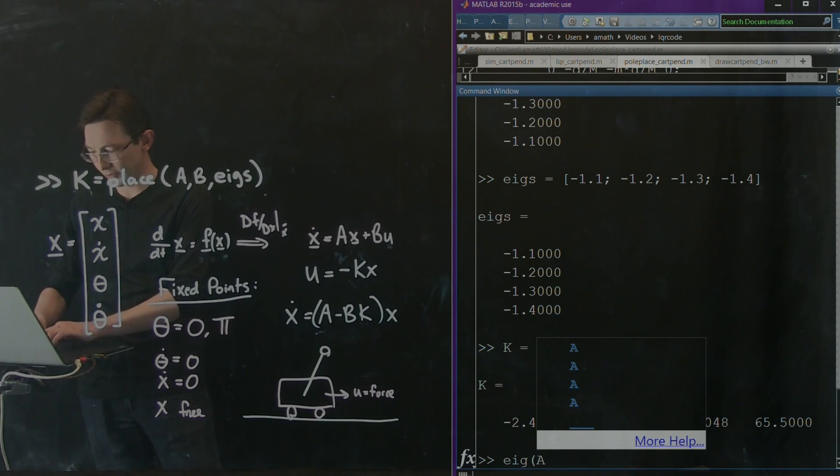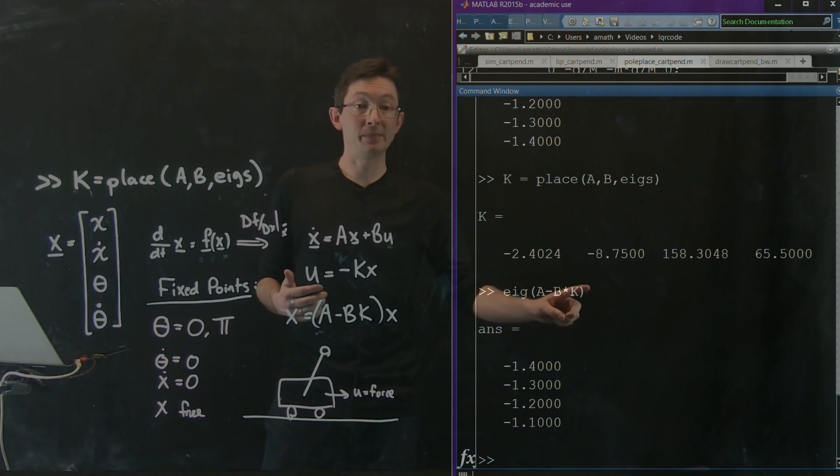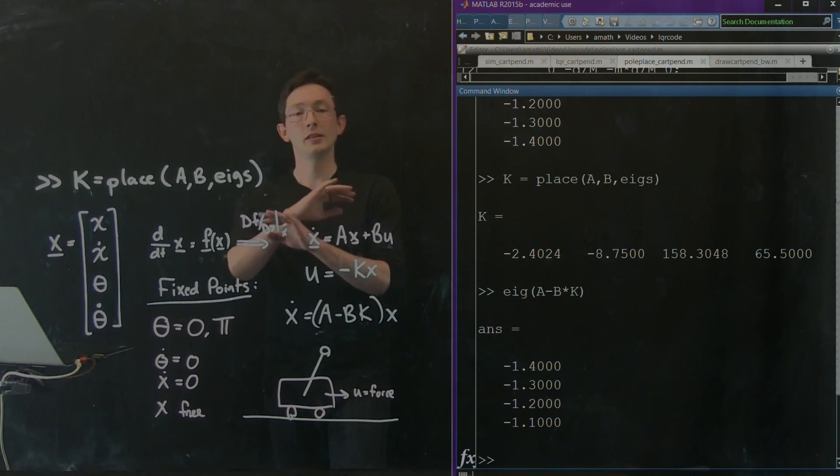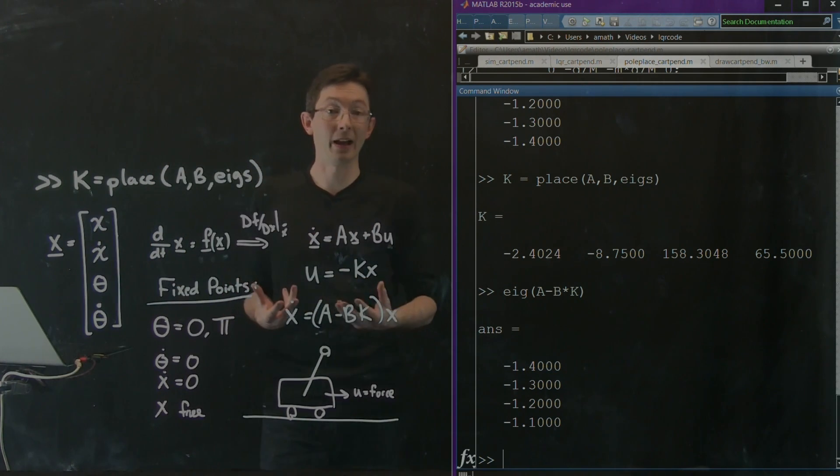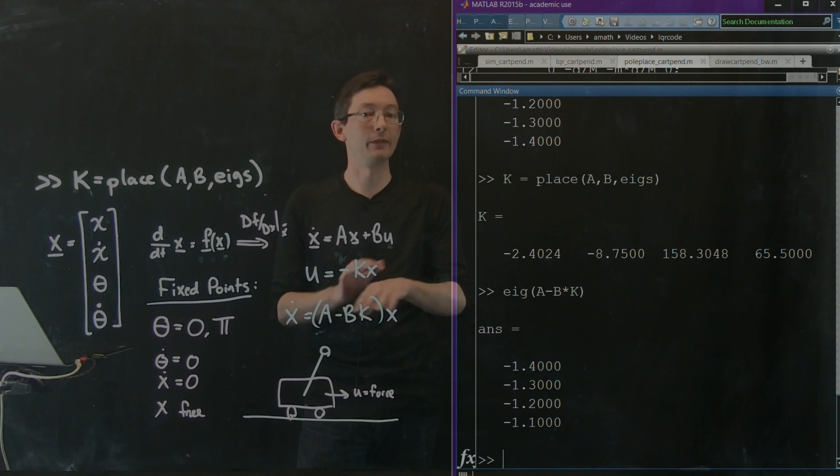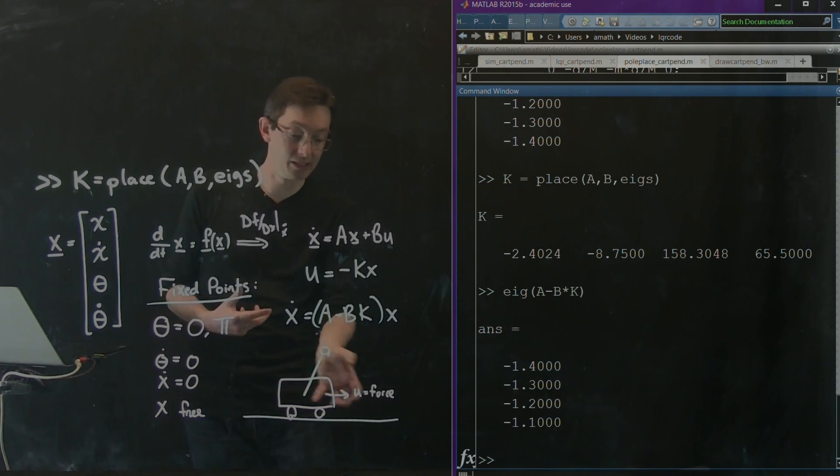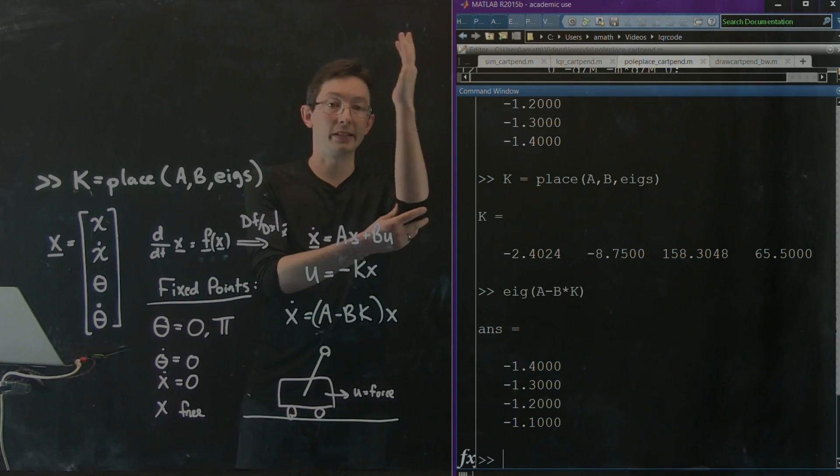So now I just say I want to verify that this closed loop system does in fact have the right eigenvalues. So I'm going to do A minus B times k. And the closed loop system A minus B times k does in fact have these desired eigenvalues. So it's really that simple to place your eigenvalues where you want with closed loop feedback if your system's controllable. If your system was not controllable, you wouldn't be able to do this. So we get this because our system's controllable. Because force on the cart is a good control that allows me the authority to stabilize this pendulum.